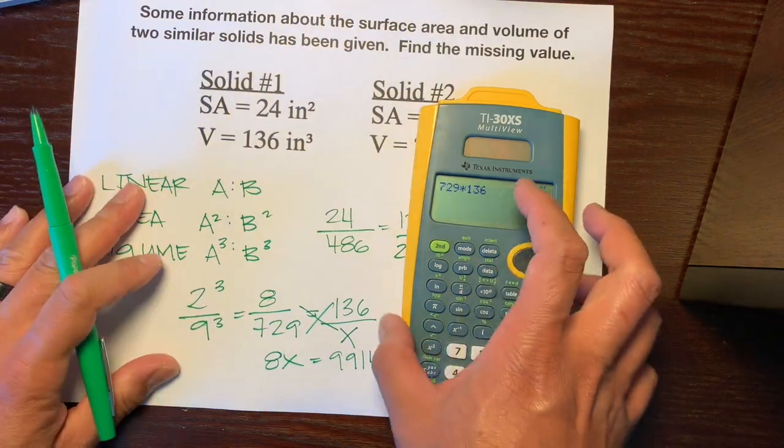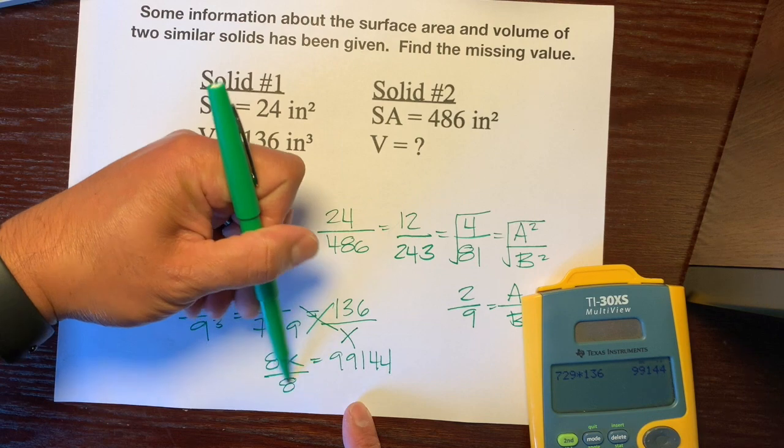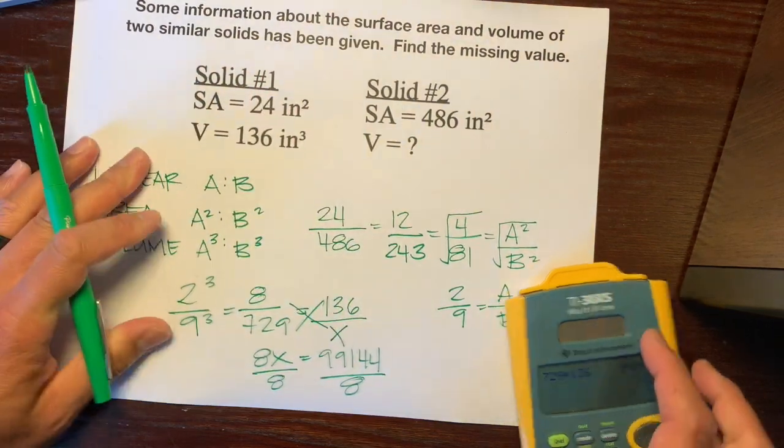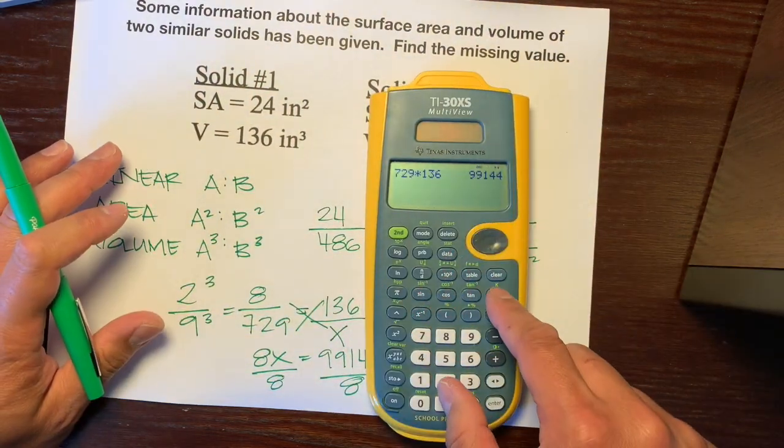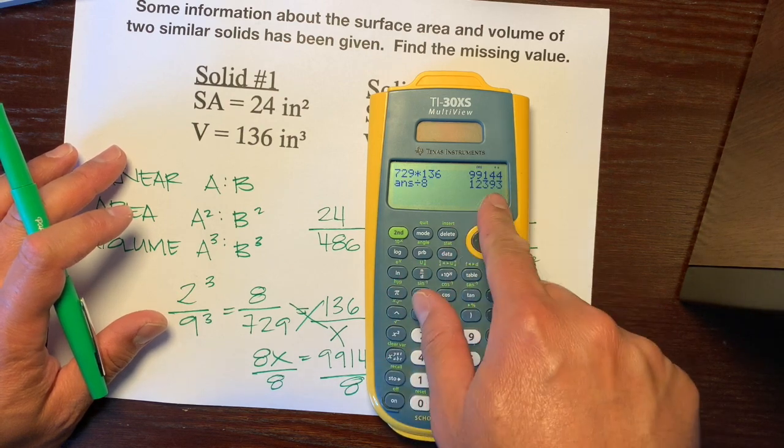And opposite of multiplying by 8 is dividing by 8. And let's divide this number by 8. Hopefully, it's a whole number. And it is. So, 12,393.